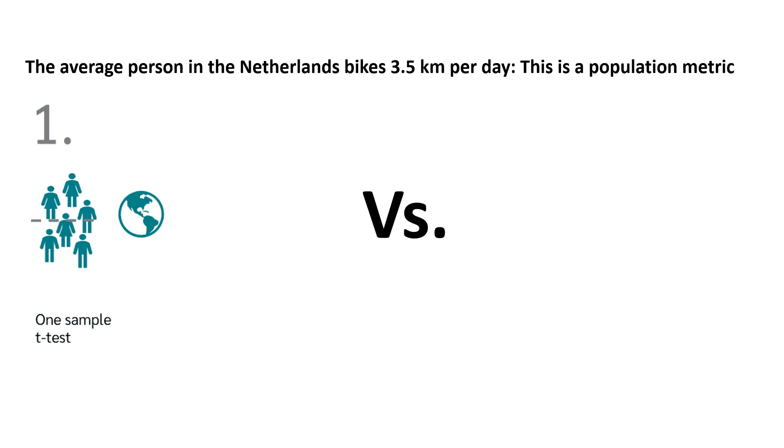However, maybe I want to know how much the average HMSM student bikes daily and we want to know if it's different or not from this population value. In this case, I will need to do a one sample T-test. Our variable that we are comparing is the distance biked.